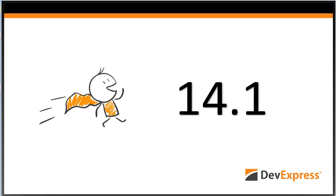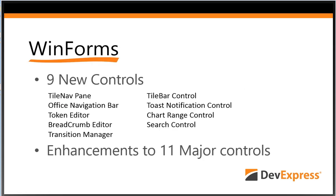Today I want to talk about the new features and demonstrations included in 14.1, to highlight how easy it is to build stunning UIs. In WinForms, we've added nine brand-new controls, including navigation elements such as the TileNav, TileBar, and Office Navigation. We've got new editors with the Token and Breadcrumb editors, the new Toast Notification Control, and of course the Transition Manager, which you'll be seeing inside some of the samples.